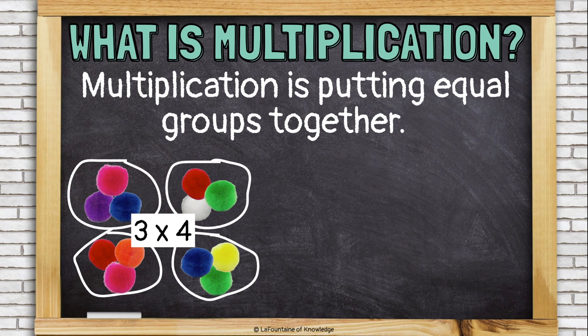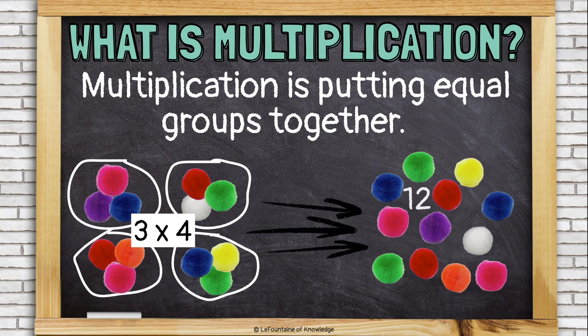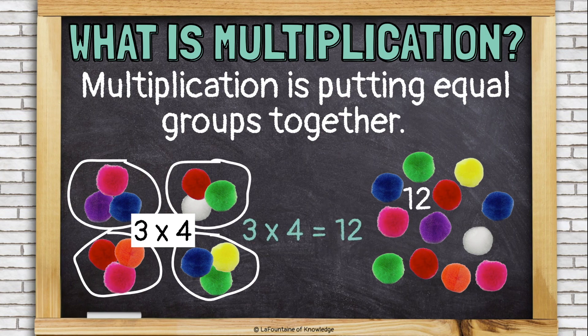To solve this problem, I need to take the pom-poms out of their groups and put them all together. All together, I have 12 pom-poms. 3 times 4 equals 12.